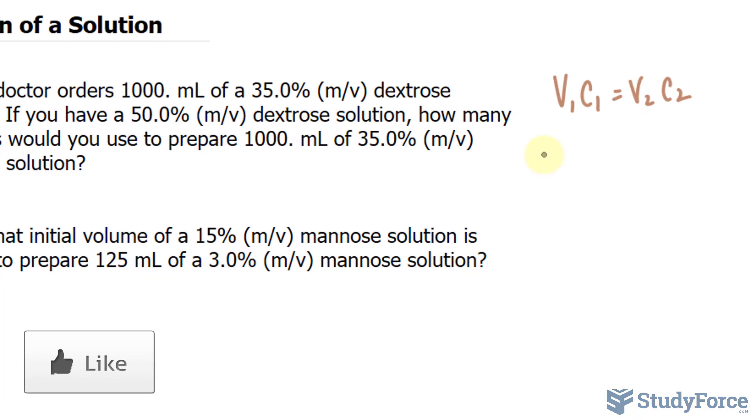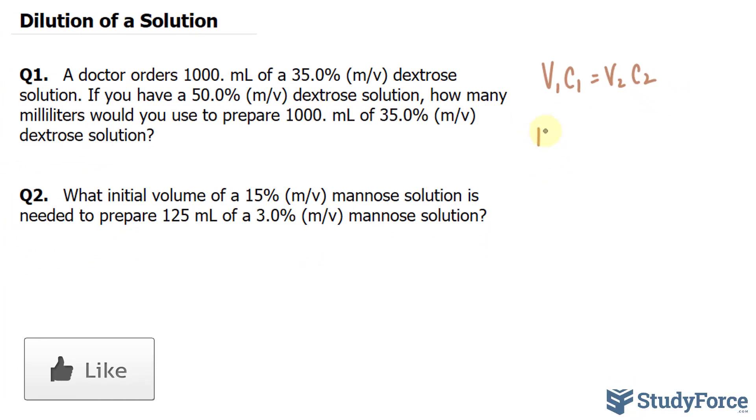So originally we have a volume of 1,000 and it's four significant figures, and the concentration is 35.0. 35.0% is equal to a volume that we're looking for at 50%. So V2 is unknown times 50.0.